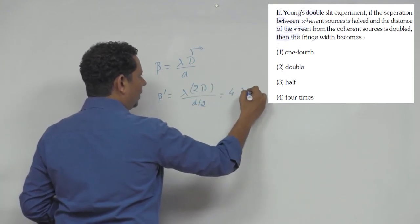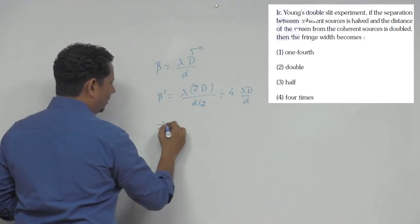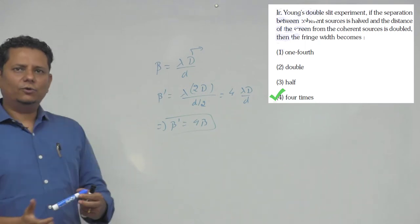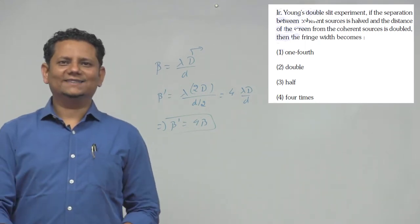This equals 4 lambda D by d, which implies beta dash equals 4 beta. So the fringe width becomes four times, and that would be the right answer.